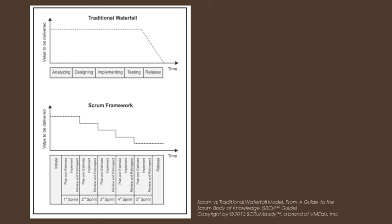Comparing the waterfall model to the Scrum framework: Scrum delivers features incrementally, while waterfall simply delivers phases. Traditional waterfall development is phase-based and sequential and does not give value until the very end of the project. Scrum turns that model on its head and delivers new features every few weeks. Instead of focusing on a big release in the future, Scrum divides complex work into simple pieces, large organizations into small teams, and far-reaching projects into a series of short time horizons called sprints.